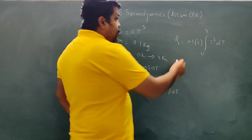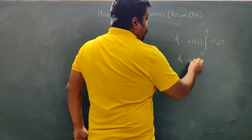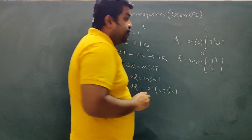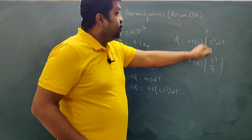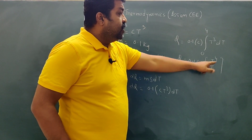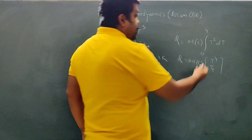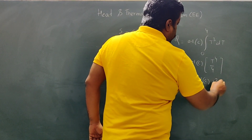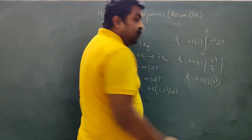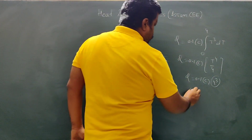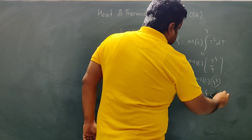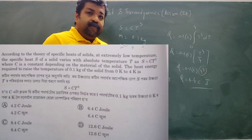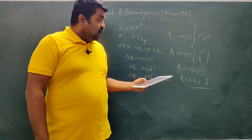Integrating: Q = 0.1C × [T⁴/4] from 0 to 4. So Q = 0.1C × (4⁴/4) = 0.1C × 4³ = 0.1C × 64 = 6.4C joules. So Q = 6.4C J. The correct option is B, which is 6.4CJ.